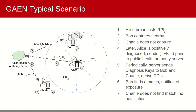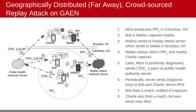The existing GAEN framework is vulnerable to replay attacks because it only considers time for RPI validity and therefore lacks geospatial awareness of where the RPI was actually captured. As such, an RPI is equally valid in Columbus, Ohio as it is in Brooklyn, New York, hundreds of miles away.